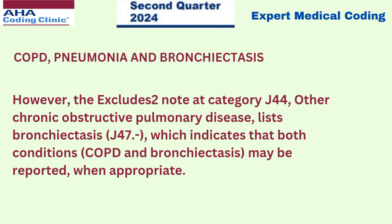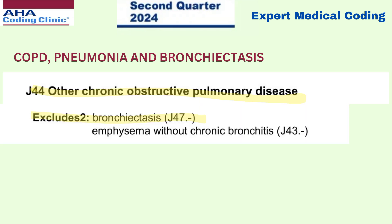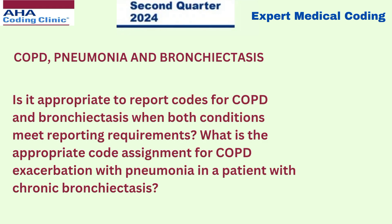However, the excludes two note at category J44 — other chronic obstructive pulmonary disease — lists bronchiectasis, which indicates that both conditions may be reported when appropriate. As you can see under code J44, there is an excludes two note for bronchiectasis, category J47. The question is: is it appropriate to report codes for COPD and bronchiectasis when both conditions meet reporting requirements?